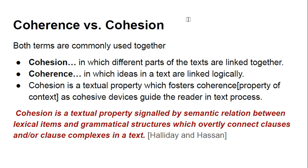Moving towards the difference between cohesion and coherence: these two terms are commonly used together. Cohesion is when different parts of a text are linked together, whereas coherence is when ideas in a text are linked logically. In cohesion, we focus on the structural binding of the text.